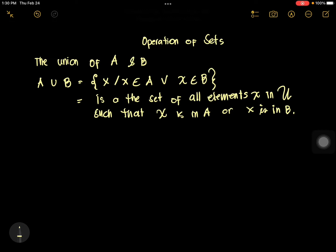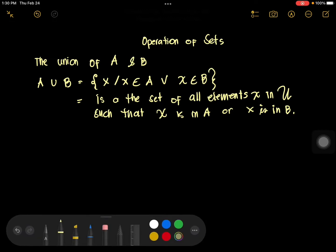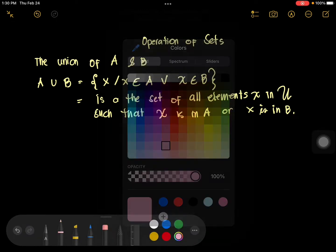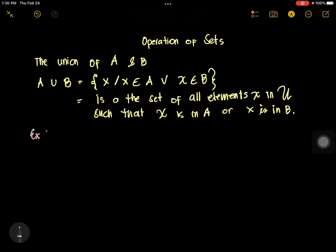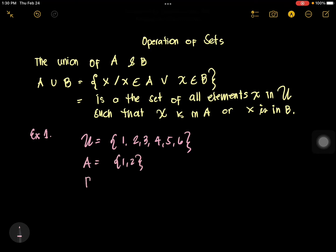Let's have an example. Example 1: if the universal set has the elements 1, 2, 3, 4, 5, 6, and you have set A containing 1 and 2, and set B having the elements 2, 3, 4 — what is A union B?